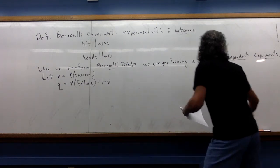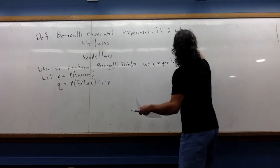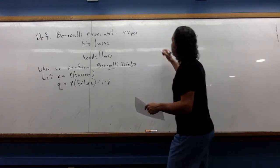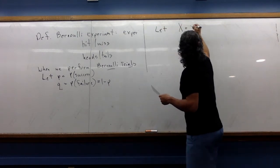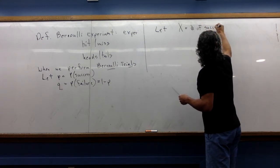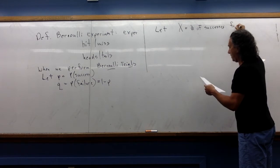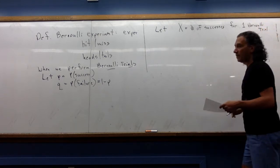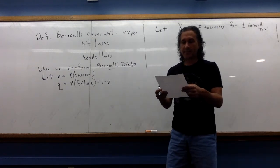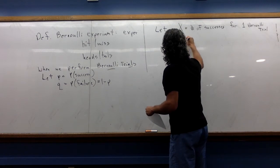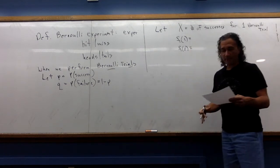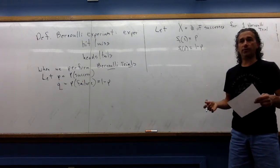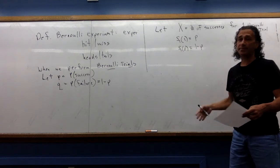With this notation and the idea of Bernoulli trials, we're ready to come up with a Bernoulli distribution. Let capital X be the number of successes for one Bernoulli trial — for example, flipping a coin just once. The PMF has two possible outcomes: one success with probability p, or no successes with probability 1 minus p, which is q. This fully describes the Bernoulli distribution.